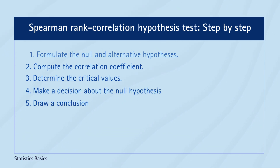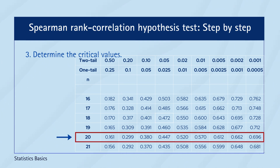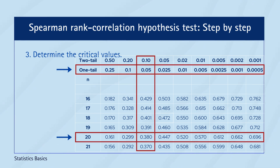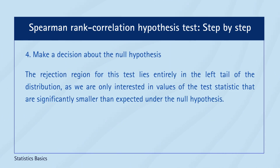In a statistical table specific to Spearman's Rank Correlation, find the row corresponding to the sample size of 20 and the column for a significance level of 0.05. The value at their intersection is the critical value. For a left-tailed test, the critical value will be minus 0.380. The rejection region for this test lies entirely in the left tail of the distribution, as we are only interested in values of the test statistic that are significantly smaller than expected under the null hypothesis.